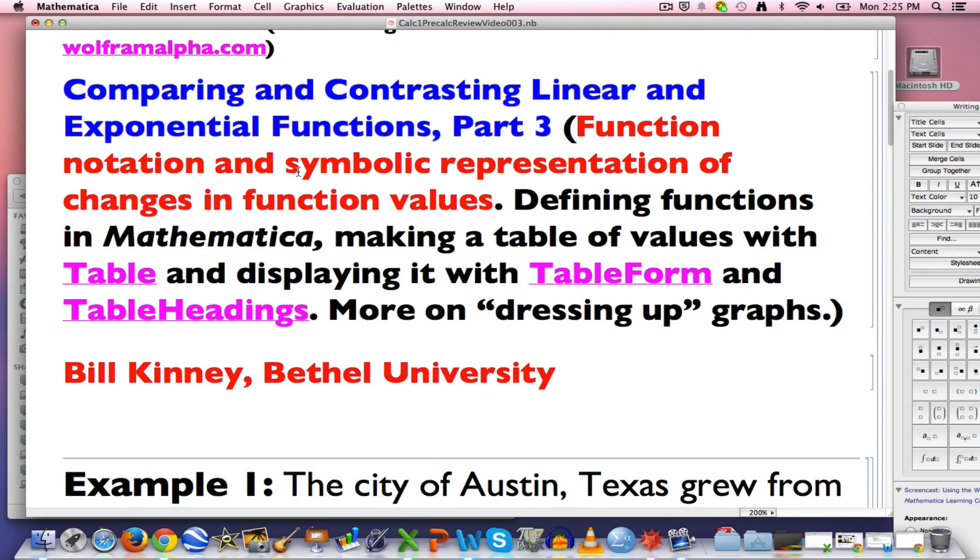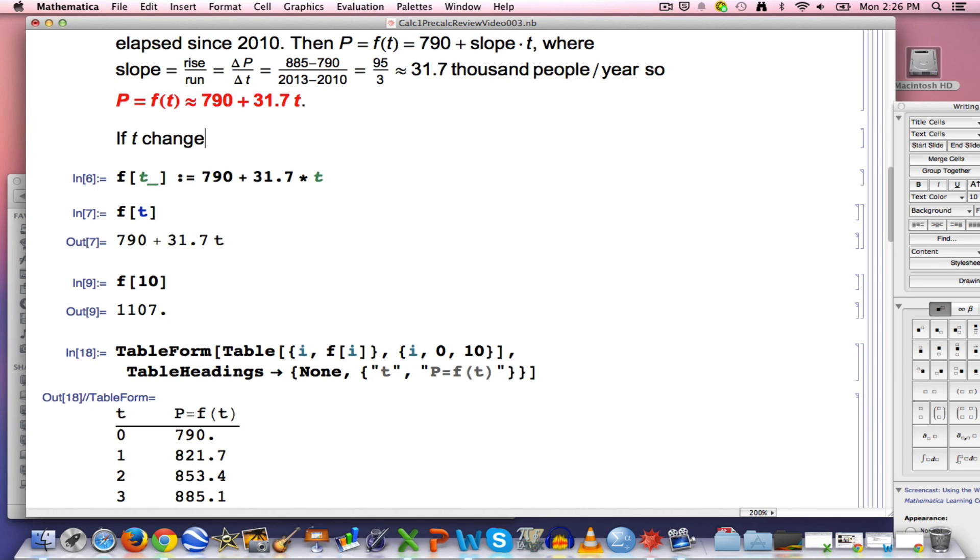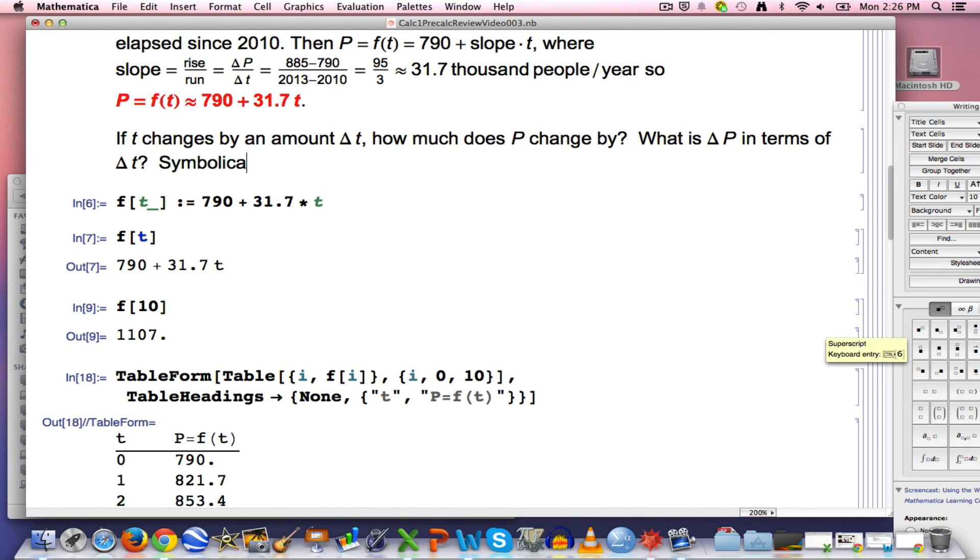Final point to make in this video. Something very important for calculus. Again, it's symbolic representation of changes in function values. What do I mean by that? Let's deal with this function here. The 790 plus 31.7 T. I want to ask if T changes by an amount delta T. Capital delta there represents change in. It's capital Greek letter delta. Delta T represents one quantity, delta T. T changes by that amount. How much does P change by? In other words, what is delta P in terms of delta T?